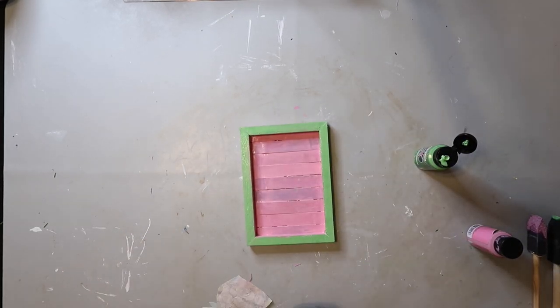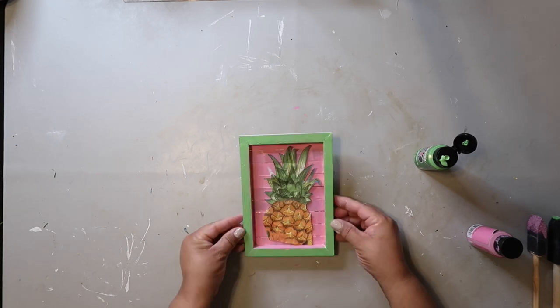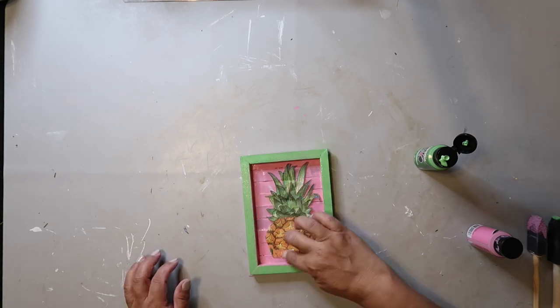I'm going to glue down this pineapple. Again, this is just from a napkin and I'm gluing it down. Yeah, it looks a little crooked, but I fixed it in a little bit.